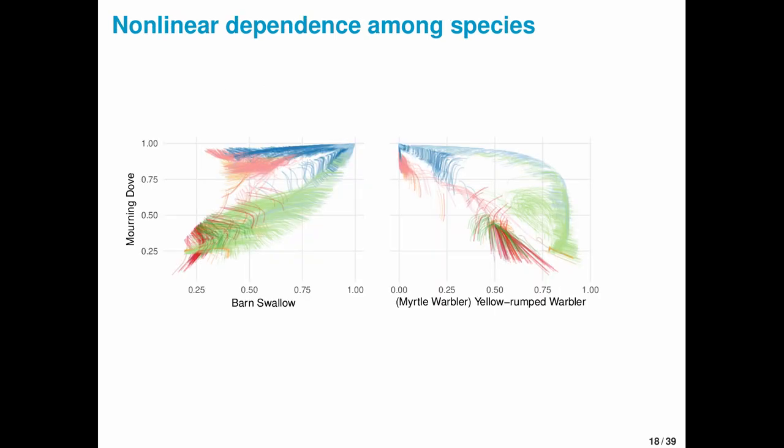This method doesn't make any linearity assumptions for associations among species. So these are occupancy probabilities for mourning dove and barn swallow. Each line is a breeding bird survey route and it's a time series; each color is a different ecoregion. So the relationships among species can vary by region, can vary through time, and can vary as a function of inputs to the model.